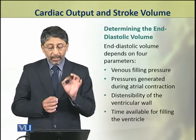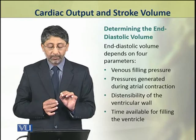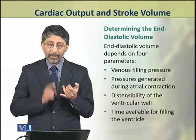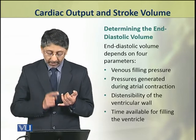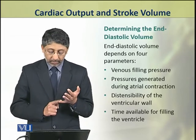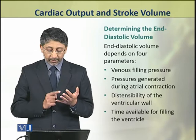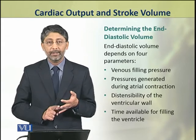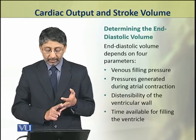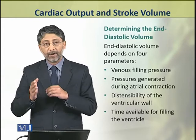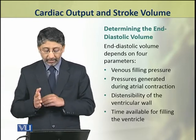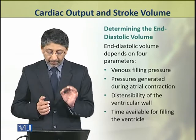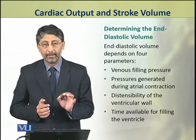The end diastolic volume depends on four parameters: number one, venous filling pressure; number two, pressure generated during arterial contraction; number three, distensibility — any expansion of the ventricular wall; and number four, the time available for filling the ventricle.